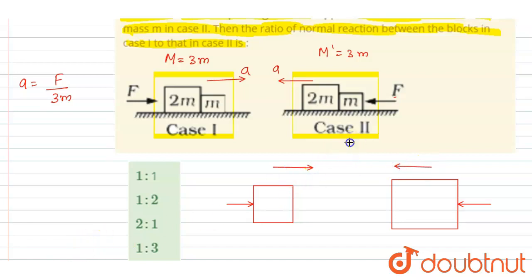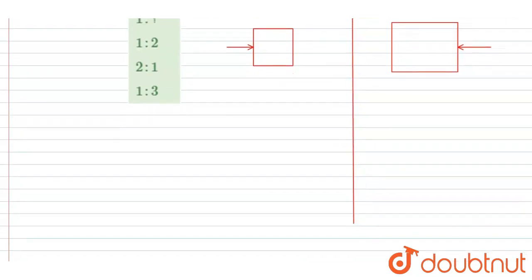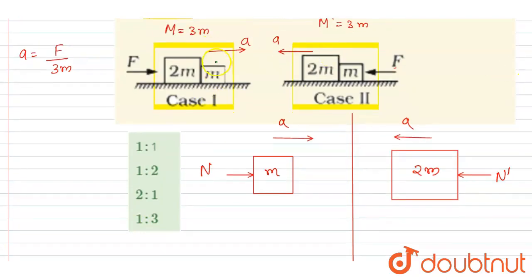So let me draw a partition here. If I say the normal reaction in this case it is N, acceleration is a, and here it is N dash, it is m and it is 2m. Now I will write the force equation. The net force on this small m,